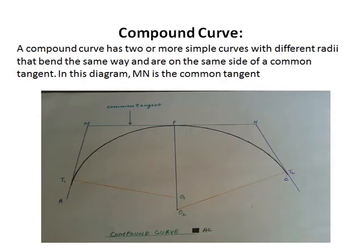Next is our compound curve. The compound curve has two or more simple curves with different radii that bend the same way and are on the same side of a common tangent. In this diagram, MN is the common tangent.